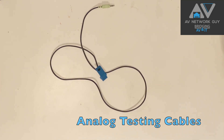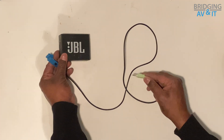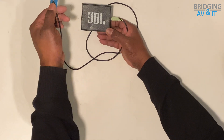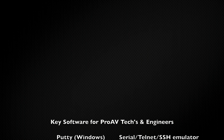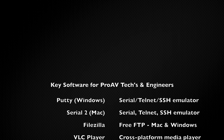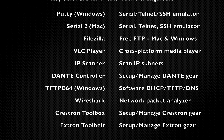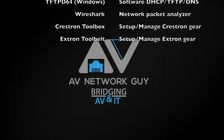Analog testing cables are great — for example, a TRS connector on one end and on the other end you can wire it to a phoenix block to test signal flow as mentioned earlier. You may have noticed I didn't mention other tools, but those belong in a separate video. Everything covered so far is hardware — stand by for the must-have list of software.